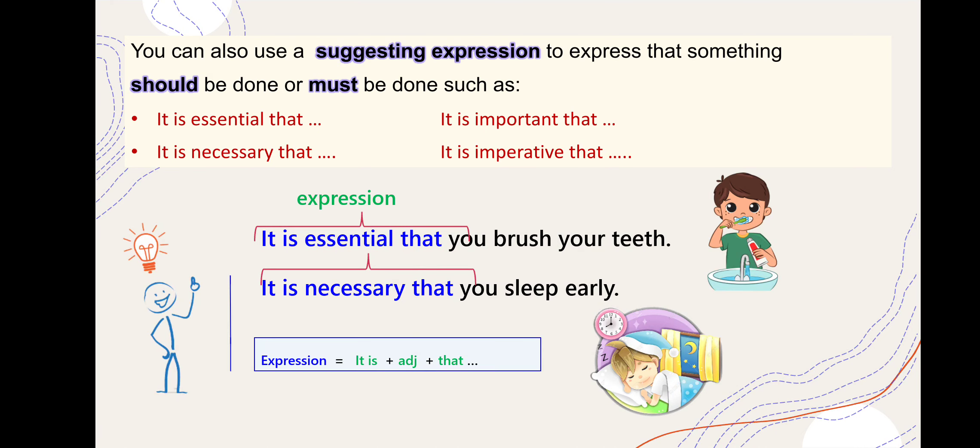شو بدأ الجملة - 'it is' بعدين أحط 'essential' أو 'necessary'. تحفظين الفريز نفسه: 'it is essential that'، 'it is necessary that'، 'it is important that'، 'it is imperative that' - بعدها السبجكت والفعل المجرد.